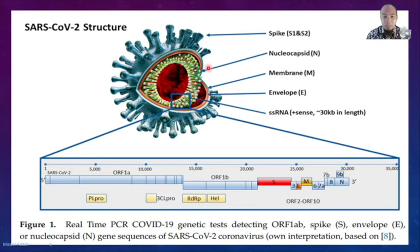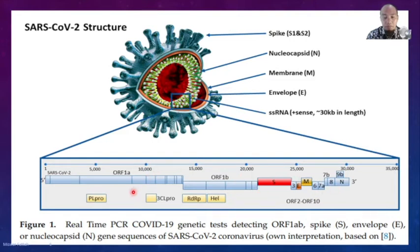This is the SARS-CoV-2 structure. Some very important targets for testing include ORF1AB, RDRP, N gene, and S gene. Some of these molecular targets are very important to detect SARS-CoV-2.